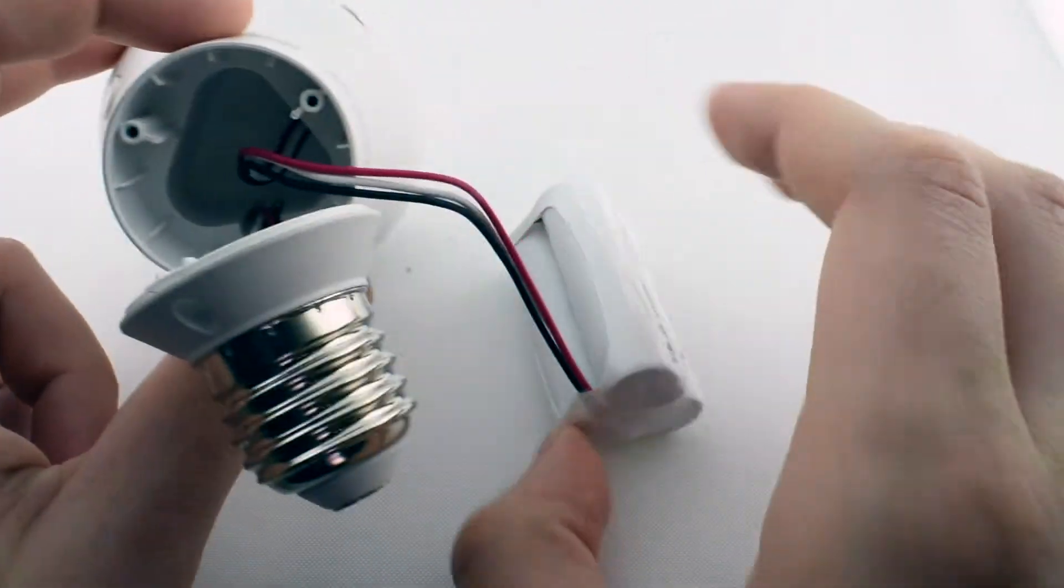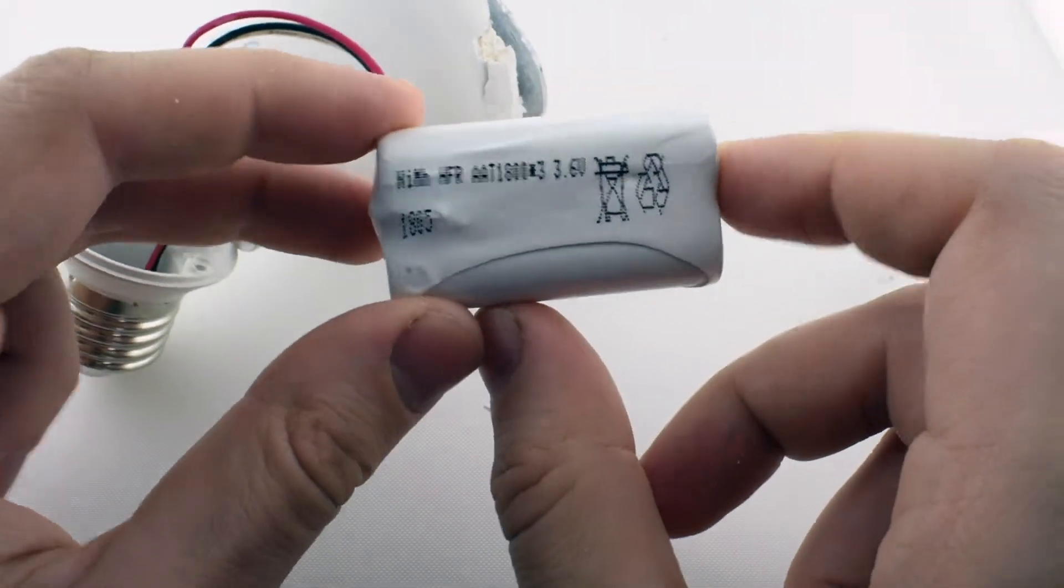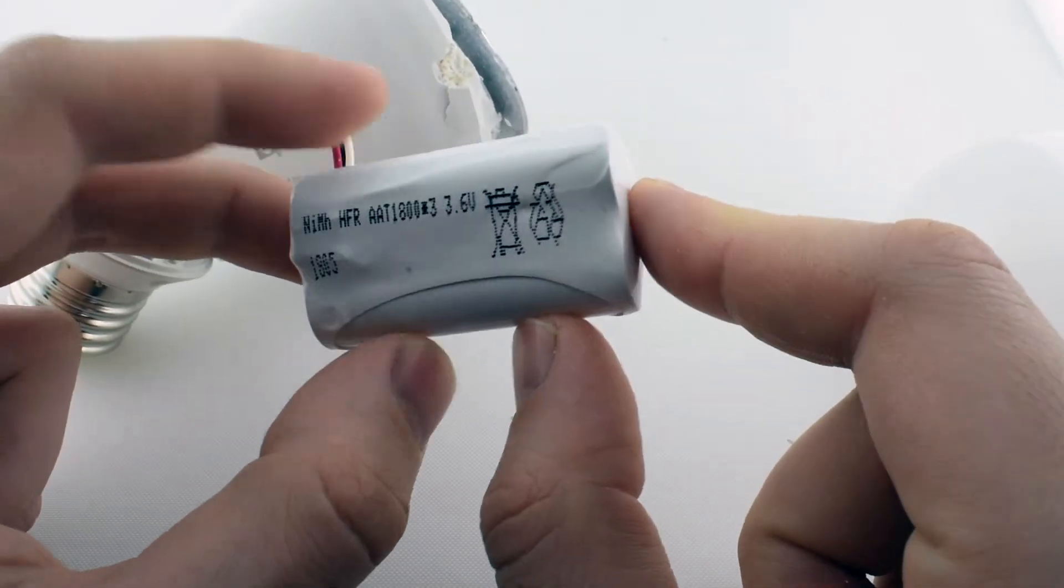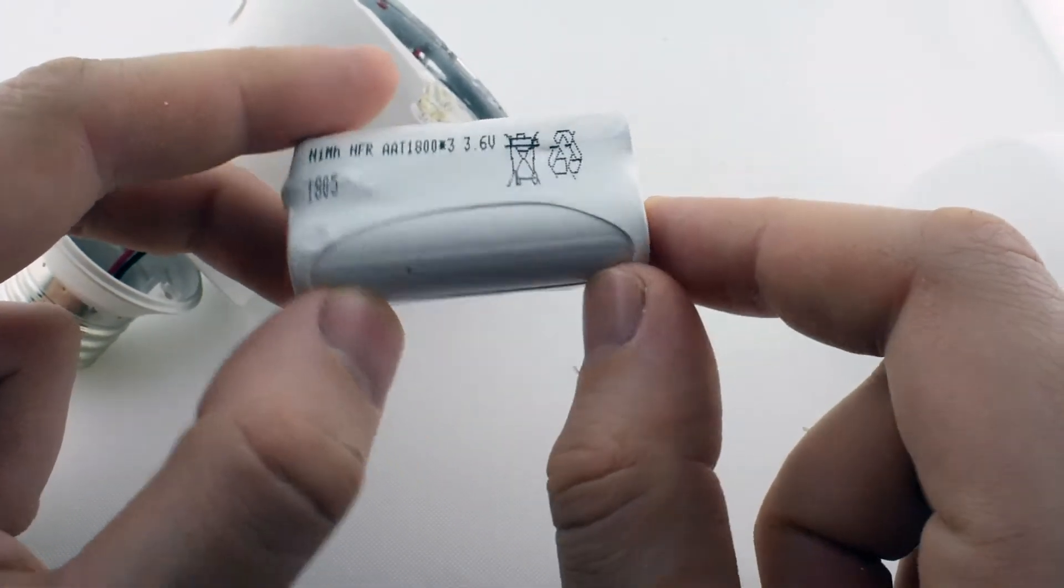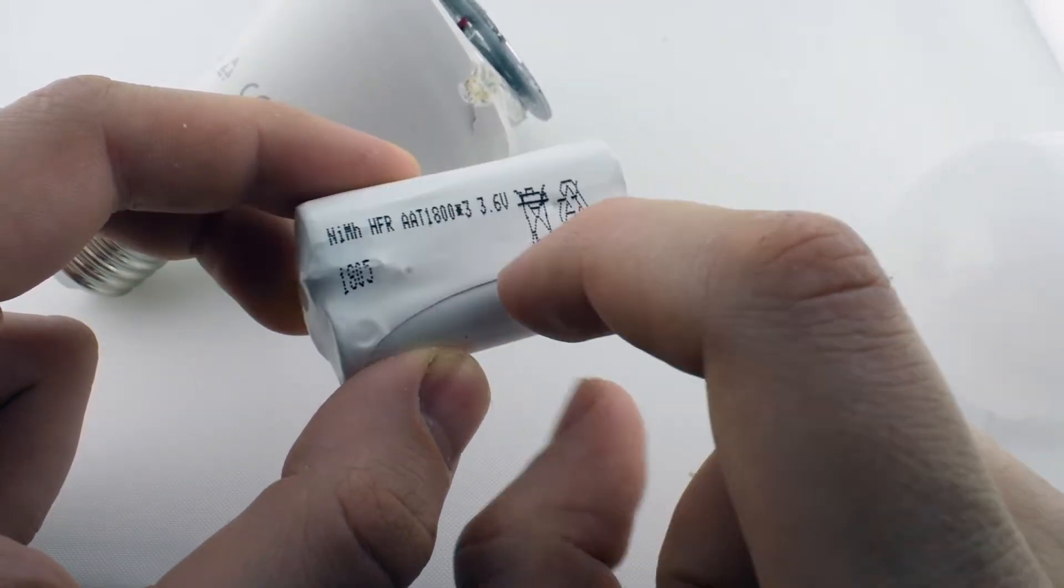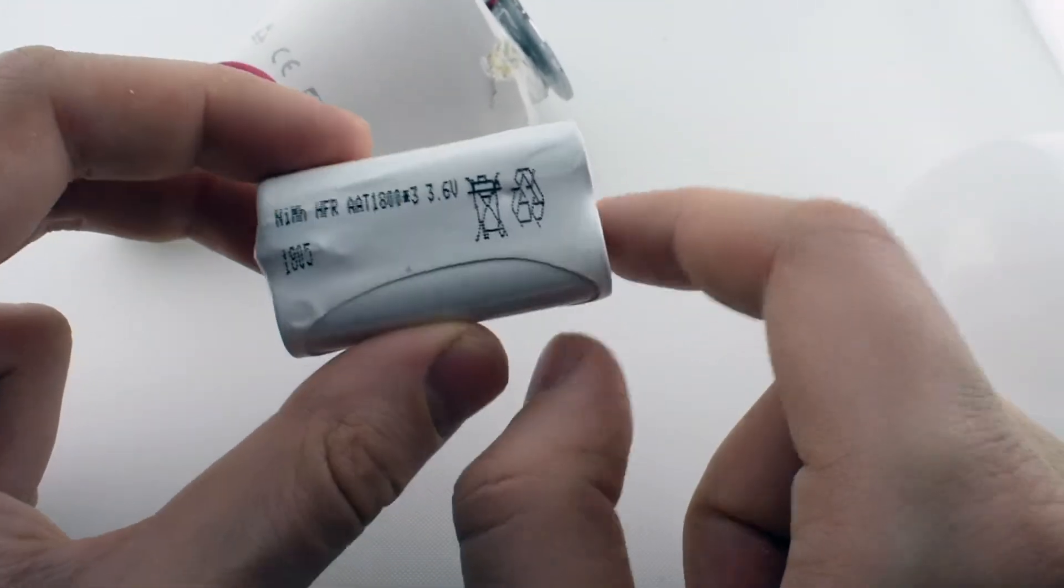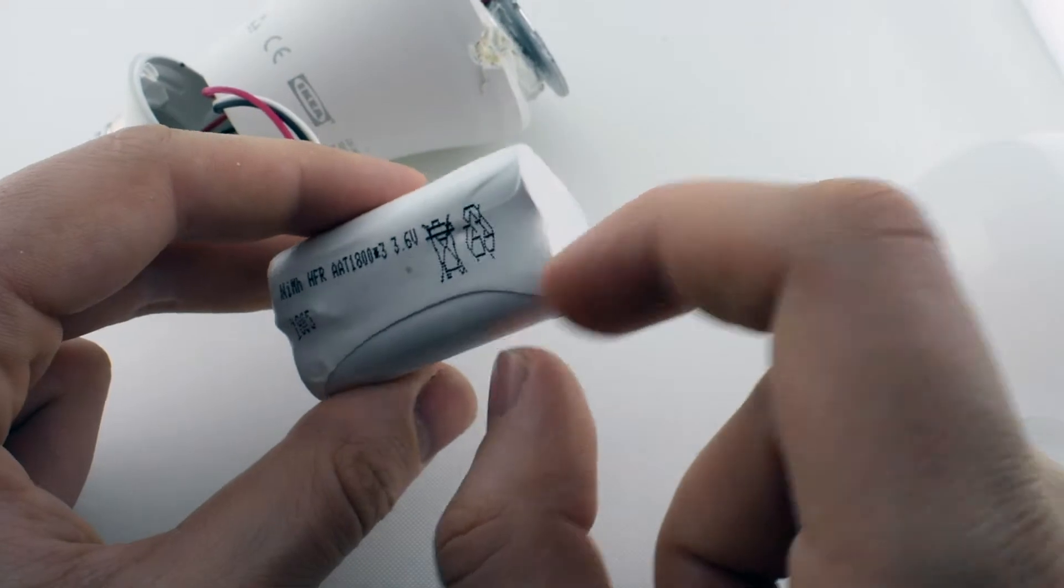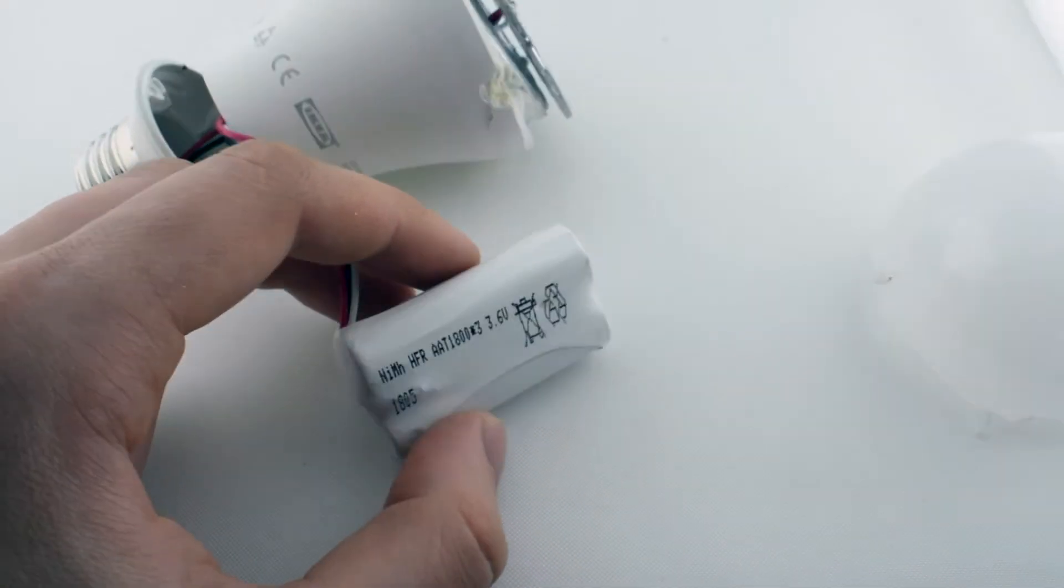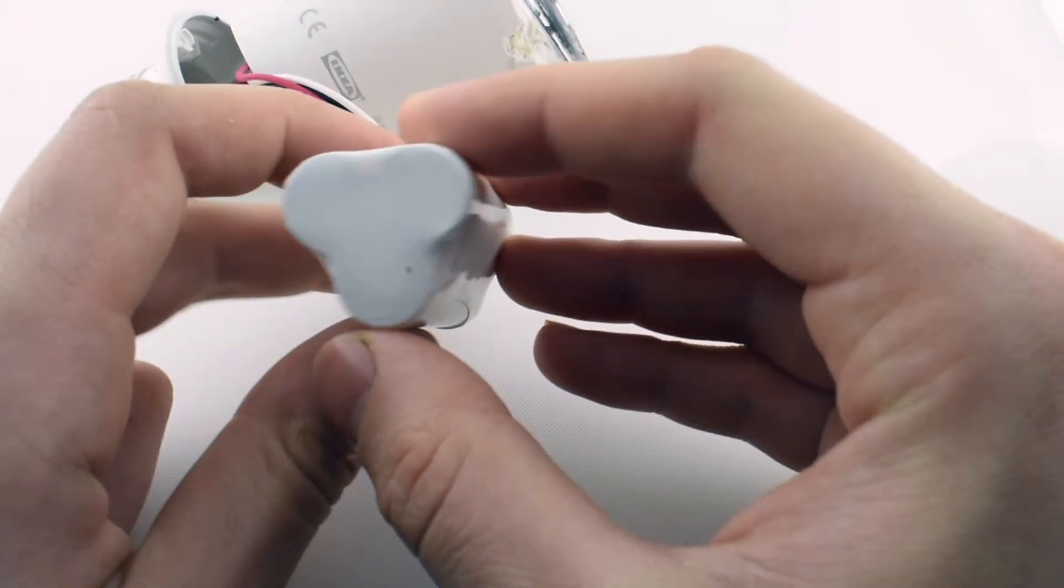And here you also have the batteries, which are nickel metal hydride batteries running at 3.6 volts I would believe. If I remember, this is just the standard, the same kind of batteries that you find in other rechargeable things, maybe in the same series as the ones they sell in the AA form. They seem to be the same size.